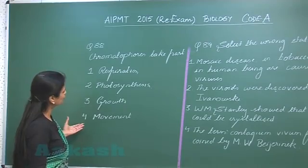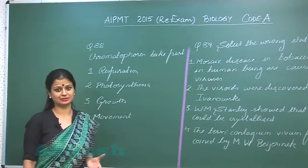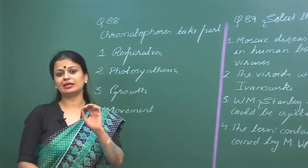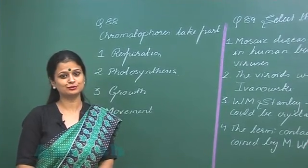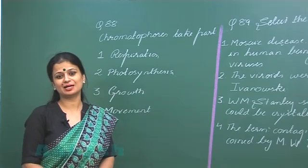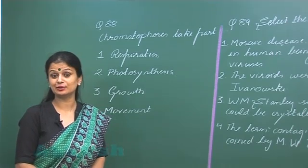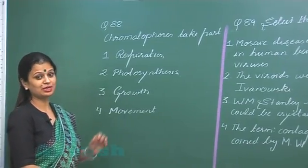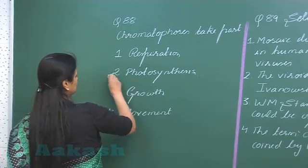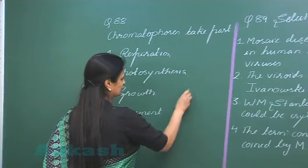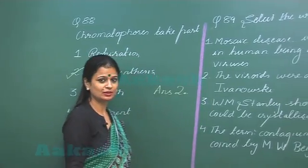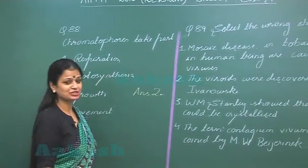Question number 88: chromatophores take part in what? Chromatophores are sac-like structures, and in their membrane there is presence of photosynthetic pigments. They are very well seen in cyanobacteria, that is BGA. So they possess photosynthetic pigments, and therefore they take part in photosynthesis. The right answer is option number 2.